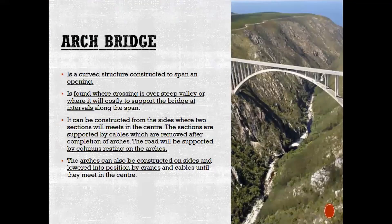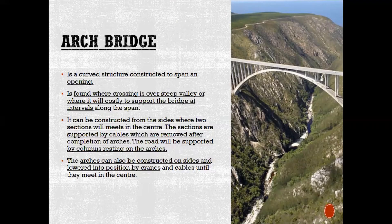What types of bridges are there? The first type: arch bridges. This is a very famous one in South Africa. It is a curved structure constructed to span an opening — remember that curved or arched structure. It is found where a crossing is over a steep valley, as in the picture, or where it would be costly to support the bridge at intervals. If you had to support this bridge with a couple of pillars or supports, it just wouldn't work — it would cost so much more than supporting it with an arch.